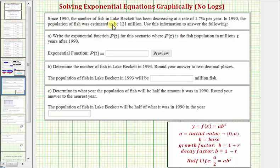Since 1990, the number of fish in Lake Beckett has been decreasing at a rate of 1.7% per year. In 1990, the population of fish was estimated to be 121 million. We want to use this information to answer the following questions. Part A: write the exponential function p of t for this scenario, where p of t is the fish population in millions, t years after 1990.